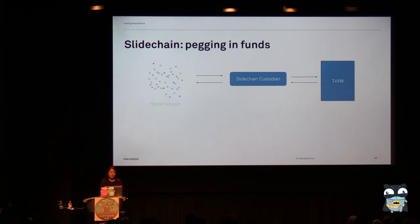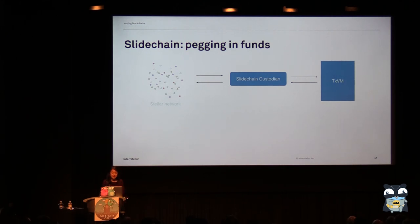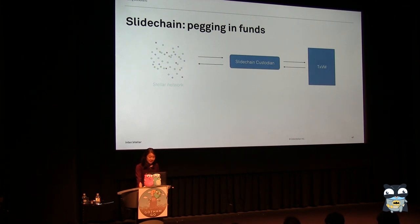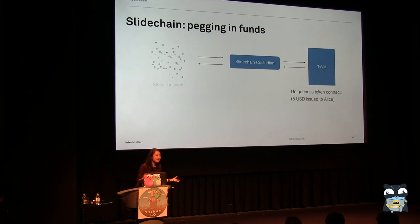You can think of TXVM as just a single entity that processes and validates transactions — like one machine building one blockchain with no consensus happening. This makes it really good for proving that we can move money on and off the Stellar network and use it somewhere else. The first thing we do when we want to peg in funds is create a uniqueness token, basically telling TXVM: I am expecting five US dollars to be issued to Alice.